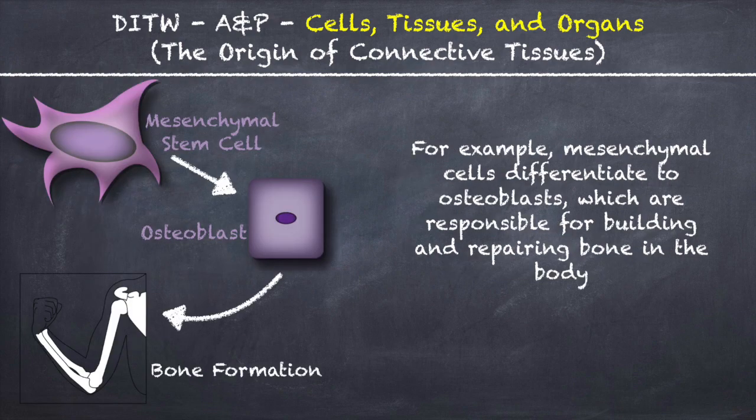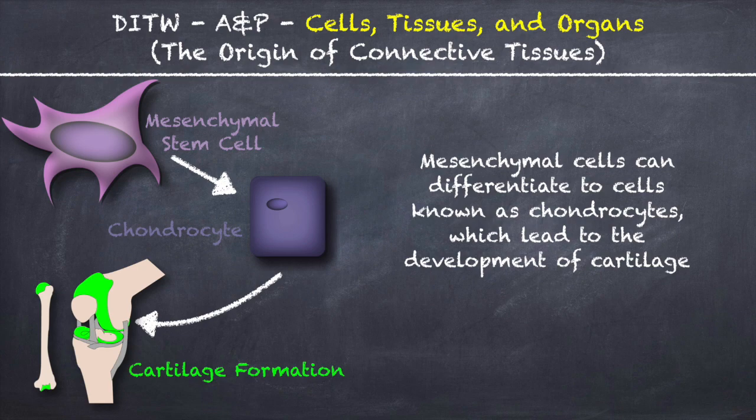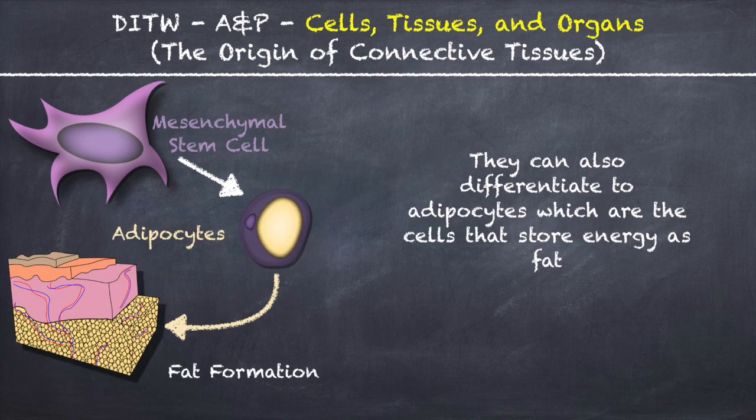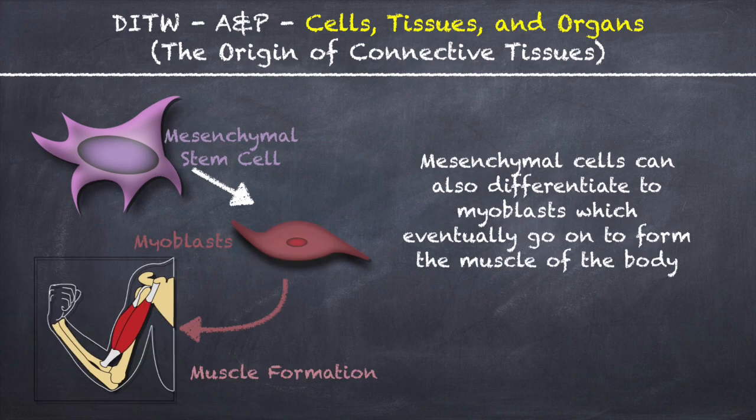For example, mesenchymal cells differentiate to osteoblasts, which are responsible for building and repairing bone in the body. Mesenchymal cells can differentiate to cells known as chondrocytes, which lead to the development of cartilage. They can also differentiate to adipocytes, which are the cells that store energy as fat. Mesenchymal cells can also differentiate to myoblasts, which eventually go on to form the muscles of the body.